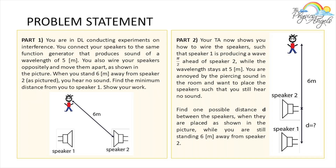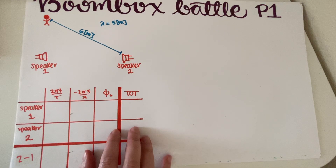This problem has two parts, so I'm just going to read Part 1 for now. You are in DL conducting experiments on interference. You connect your speakers to the same function generator that produces sound of a wavelength of 5 meters. You also wire your speakers oppositely and move them apart as shown in the picture. When you stand 6 meters away from Speaker 2, as pictured, you hear no sound. Find the minimum distance from you to Speaker 1. Show your work.